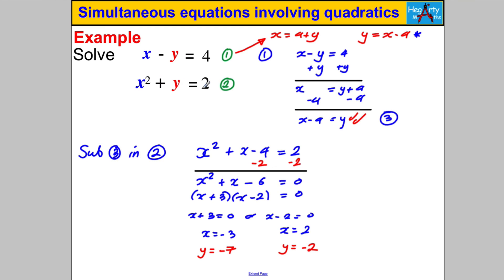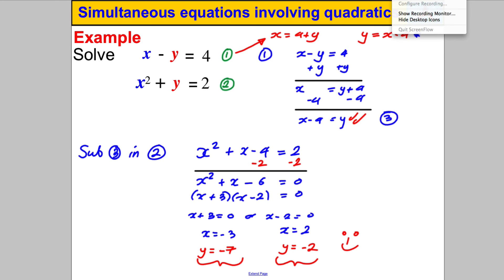Let's check both solutions in equation 2. For x = -3, y = -7: negative 3 squared is 9, and 9 add negative 7 is positive 2. Correct. For x = 2, y = -2: 2 squared is 4, subtract 2 is 2. Both work. One set of solutions is (x = -3, y = -7) and another is (x = 2, y = -2). That's it for solving simultaneous equations involving quadratics. Thanks for watching.